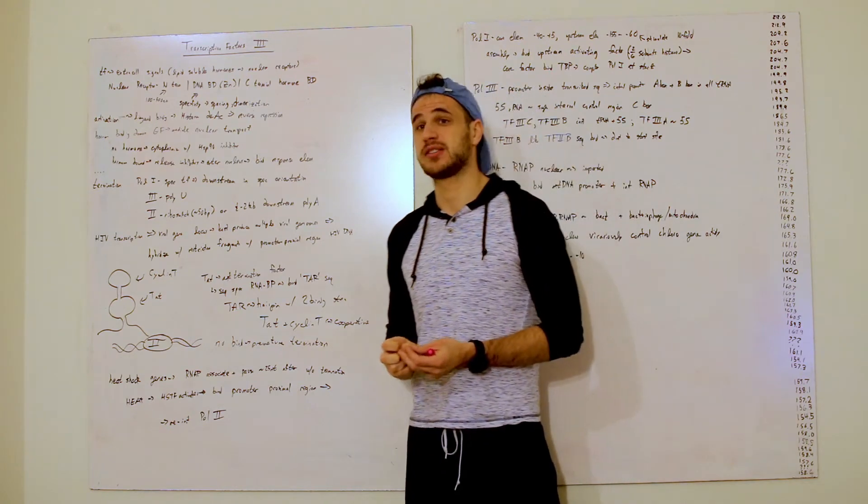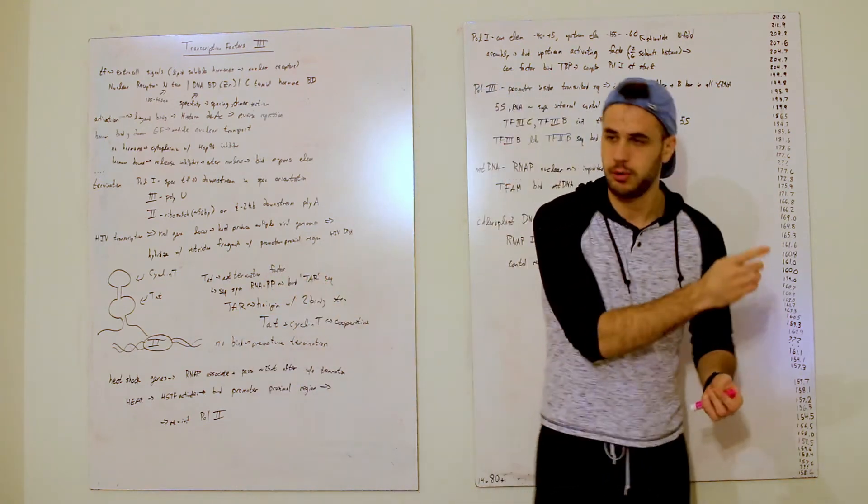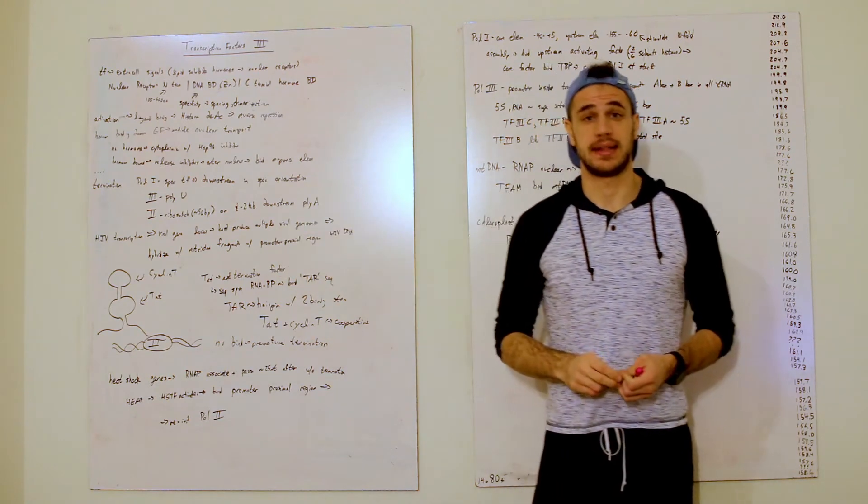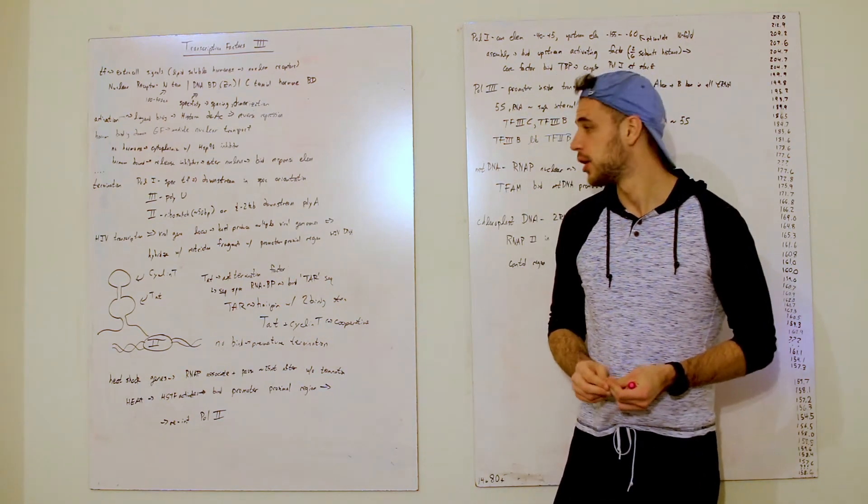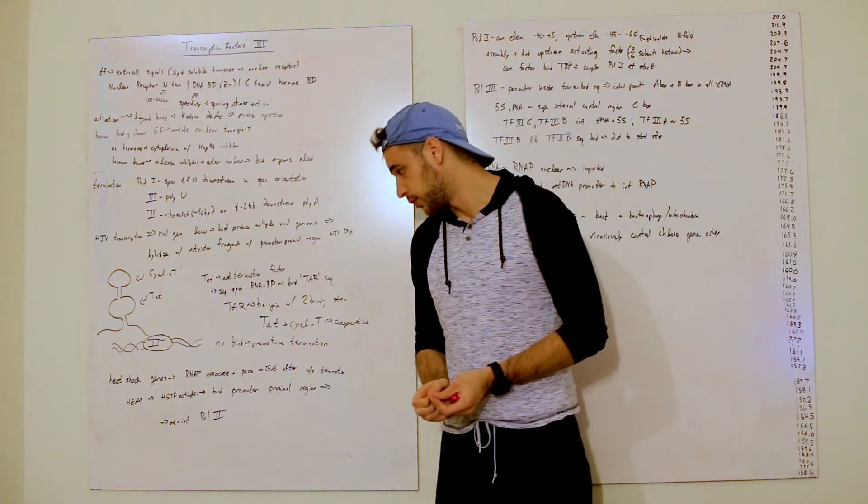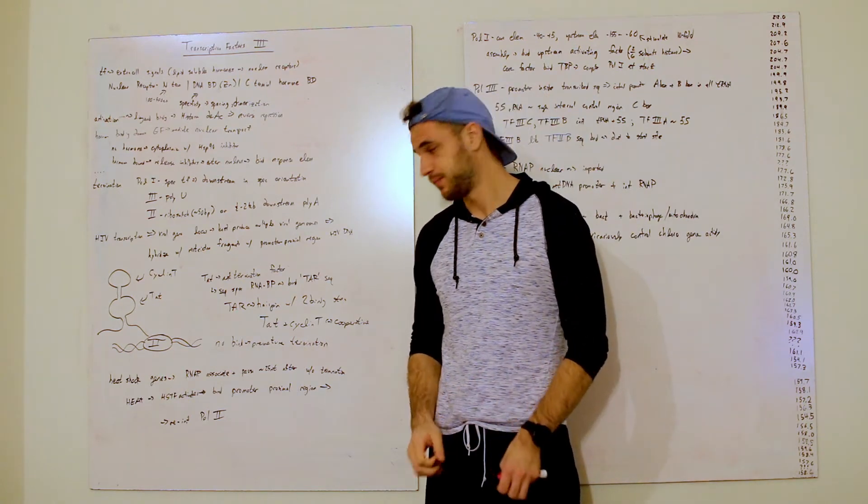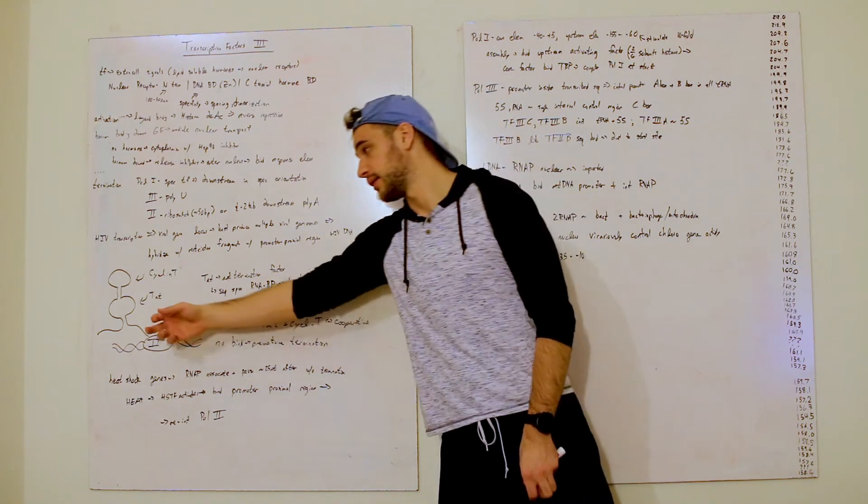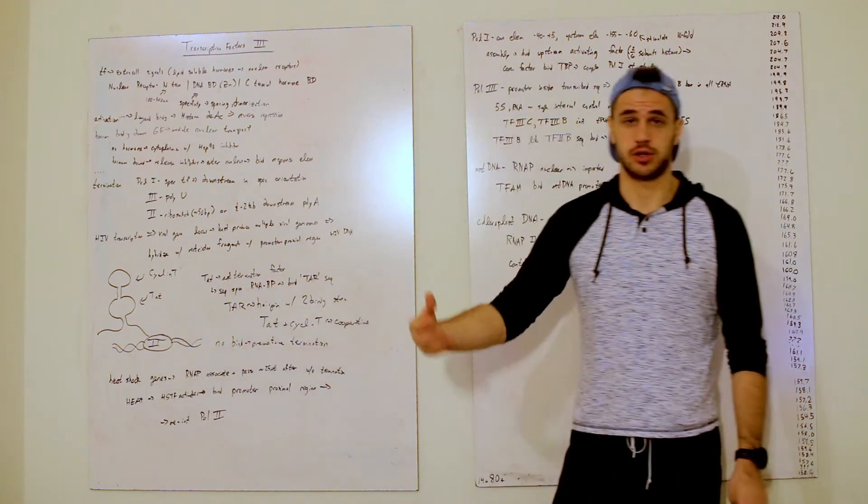So, if these guys bind, then it'll just keep on going through, and it'll terminate at that two kilobases past the poly-A tail, past the poly-A location. However, if there is no binding that occurs, then you have premature termination, and the mRNA sequence is not actually completed.